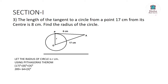17² = 289, and 8² = 64, so x² = 289 − 64 = 225. Therefore x = √225 = 15 centimeters. The radius of the circle is 15 centimeters. Let's move on to the next question.